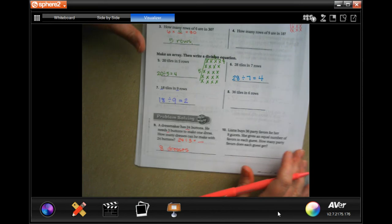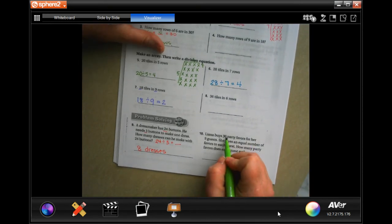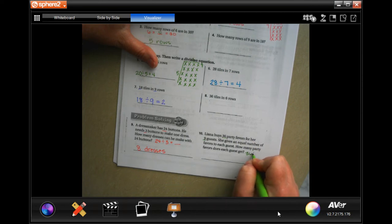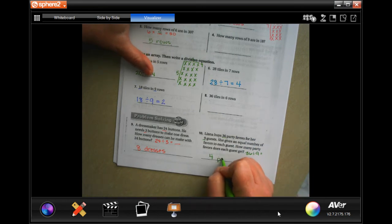Okay, Siana buys 36 party favors for her nine guests. She has an equal number of favors to each guest. So 36 divided by nine. Okay, well I know that nine times four is 36, so four, 36 favors.